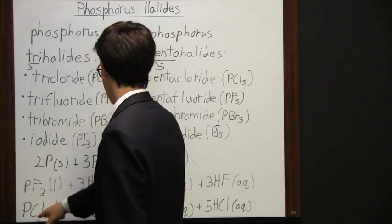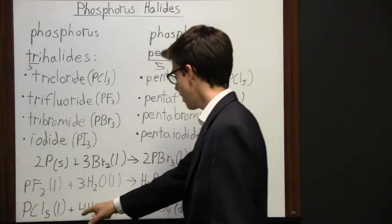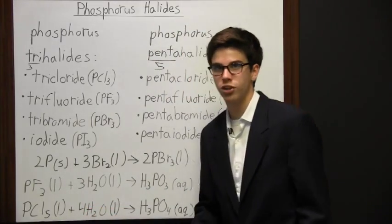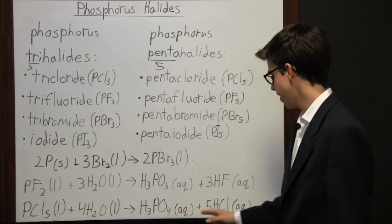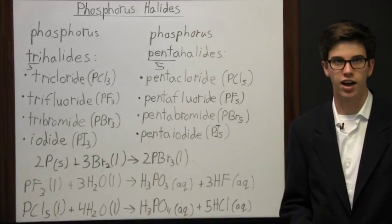Here we have phosphorus pentachloride (PCl5), which is right there. Again, that's coupled with water to make a phosphorus oxyacid, which we have there, and in addition we get a hydrogen halide.